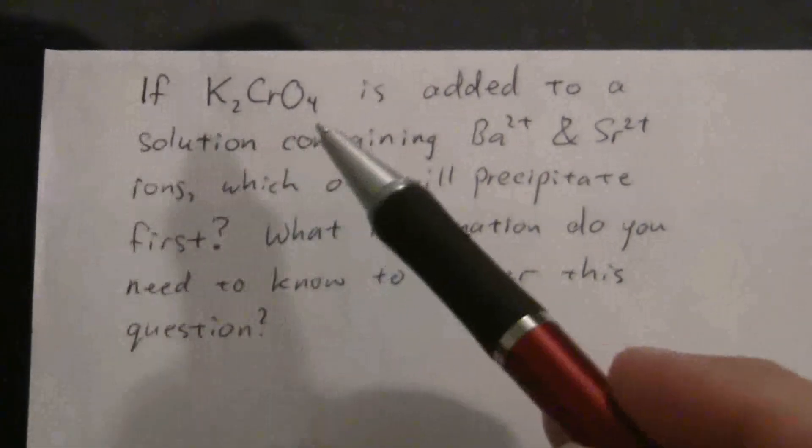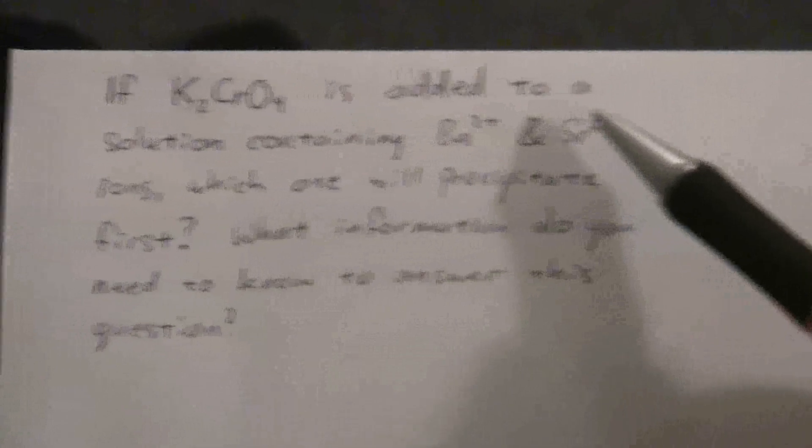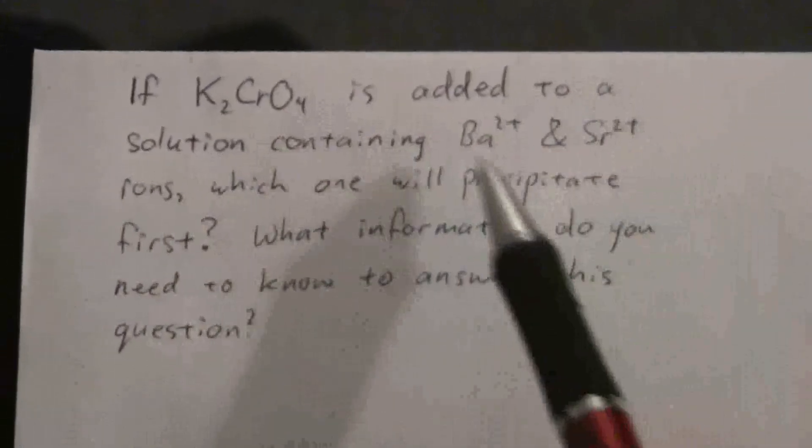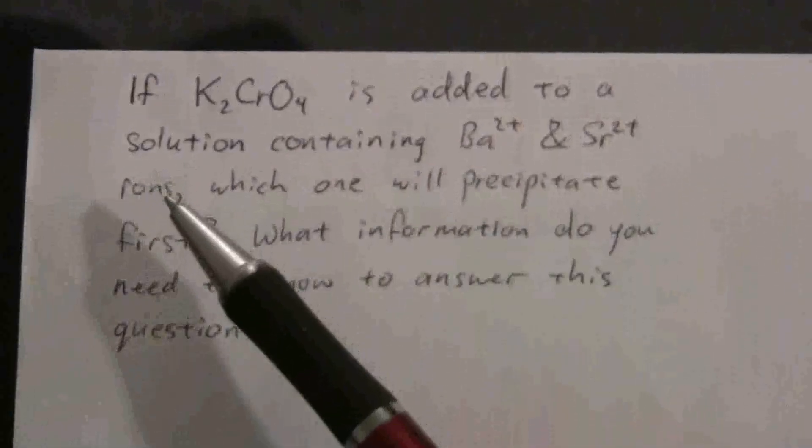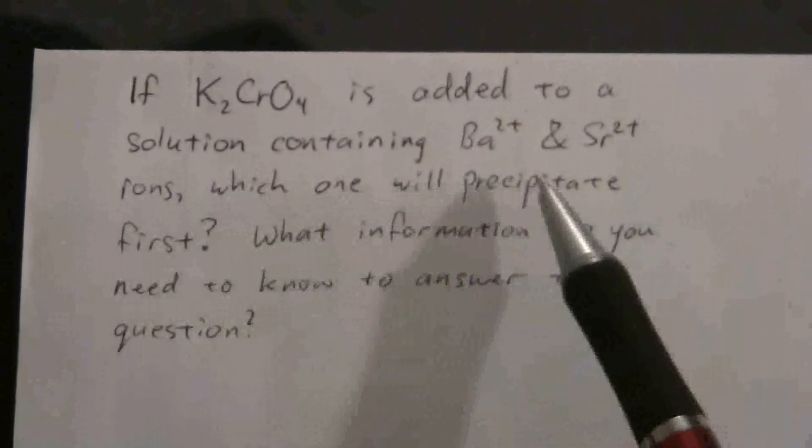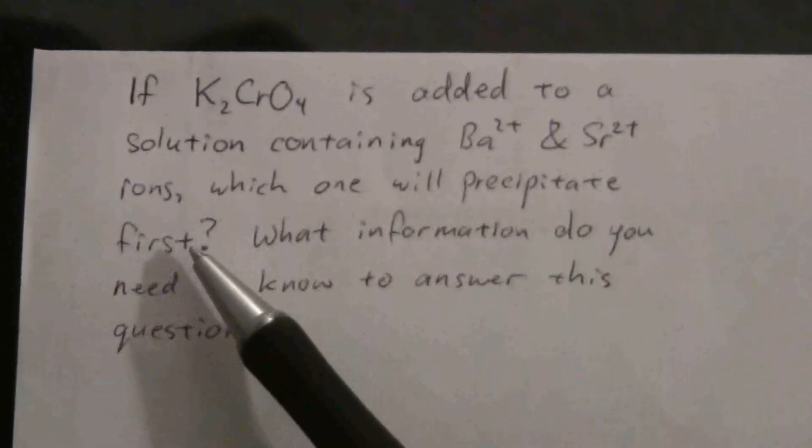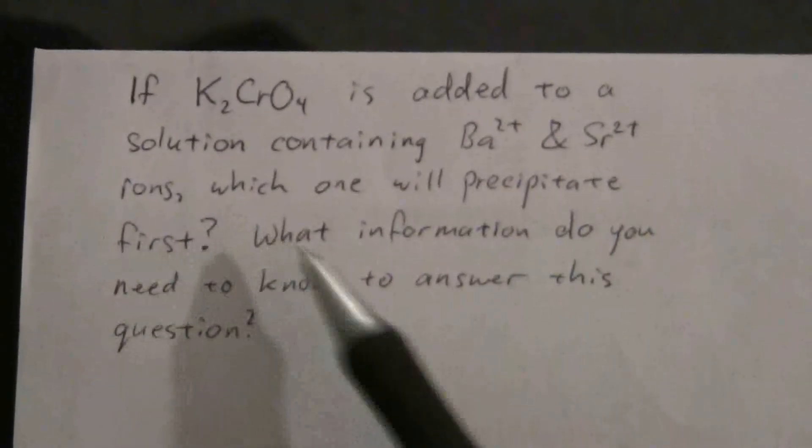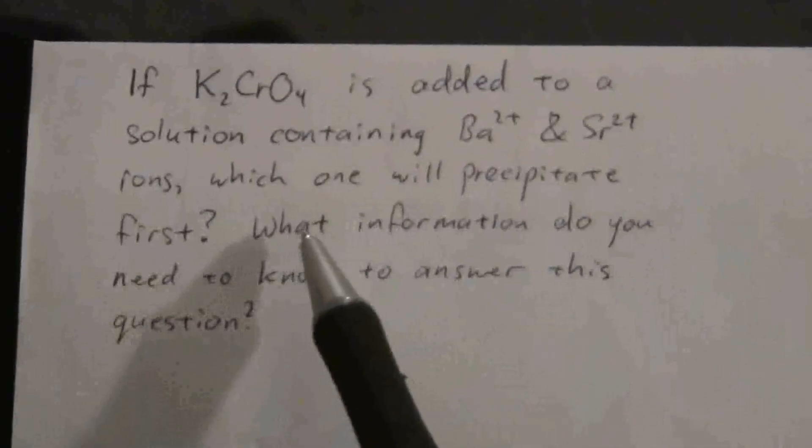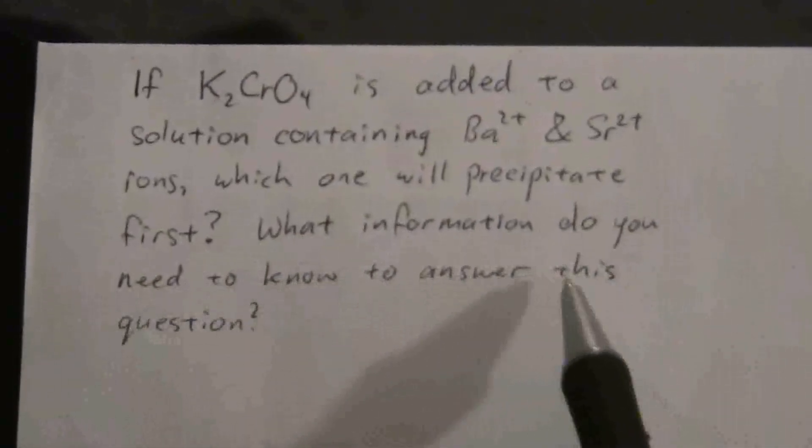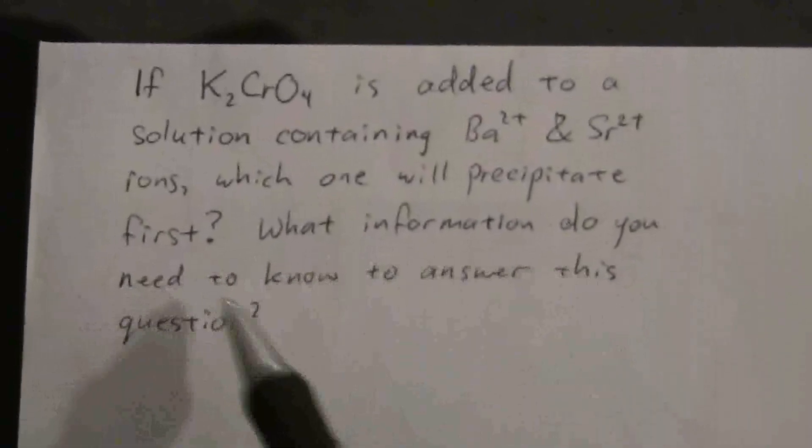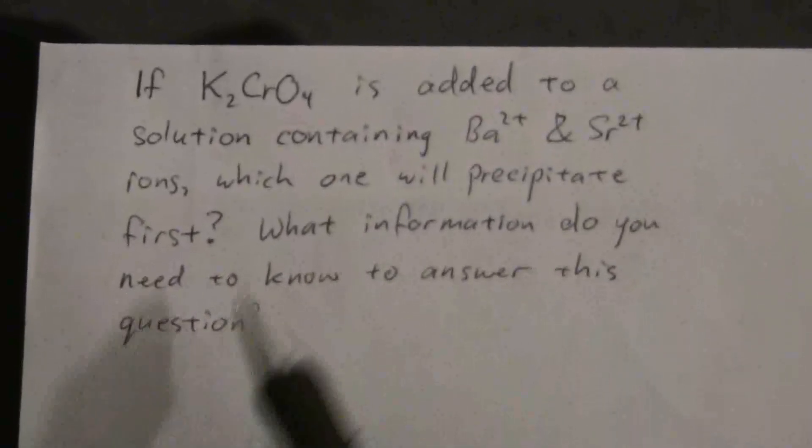So we want to know if potassium chromate is added to a solution containing barium and strontium ions, which one will precipitate first? First of all, we need to know what information do we need to know in order to answer this question?